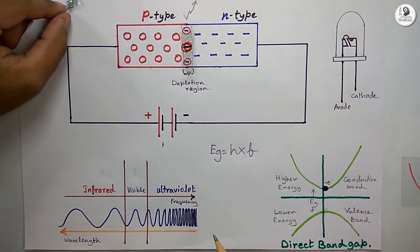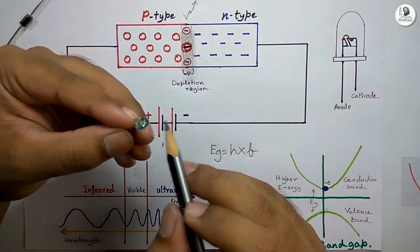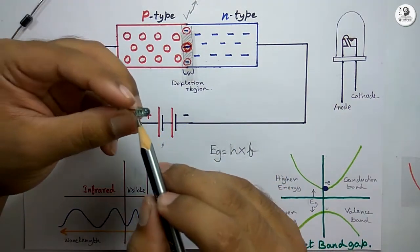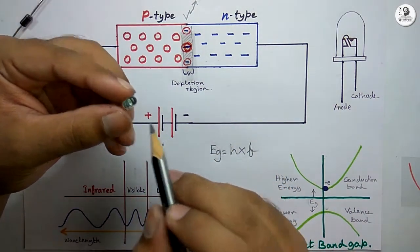Thus, LED can emit light within our visible spectrum. We can see the light glowing from this LED.